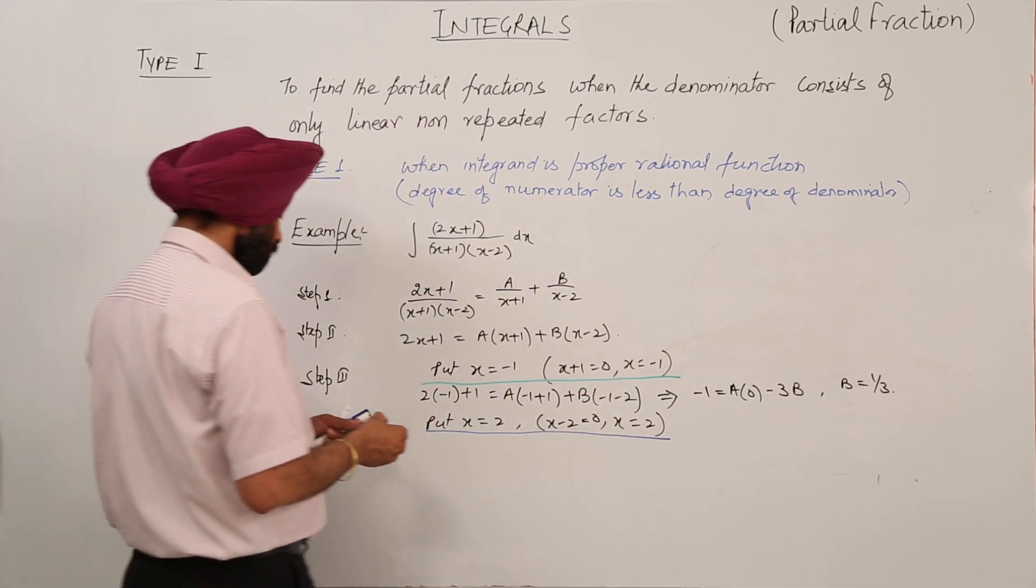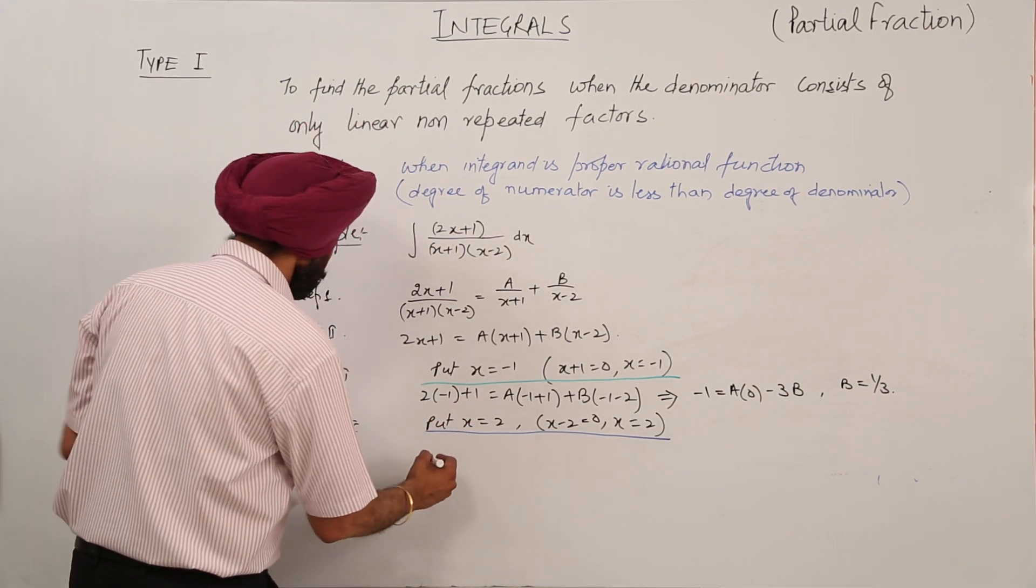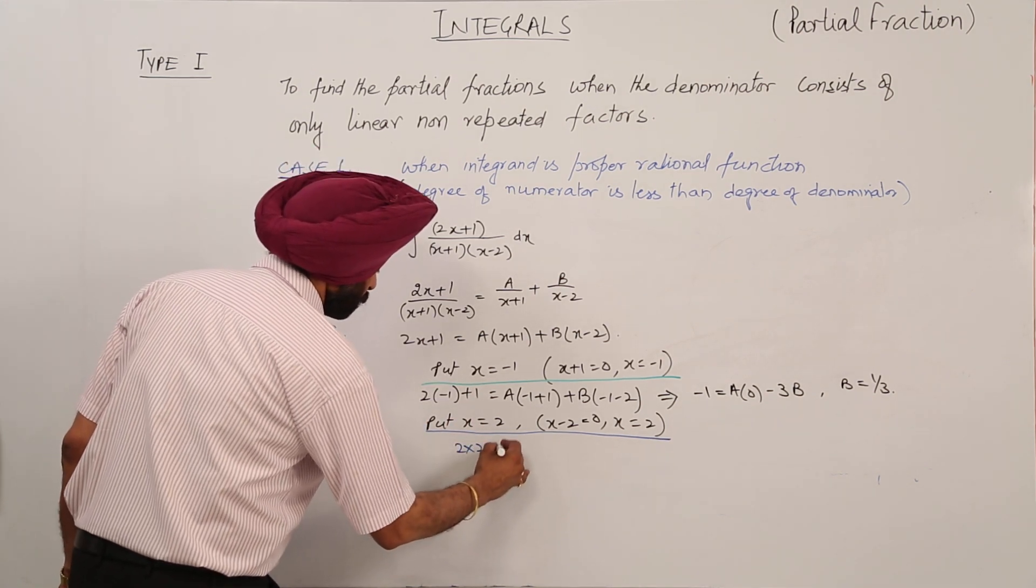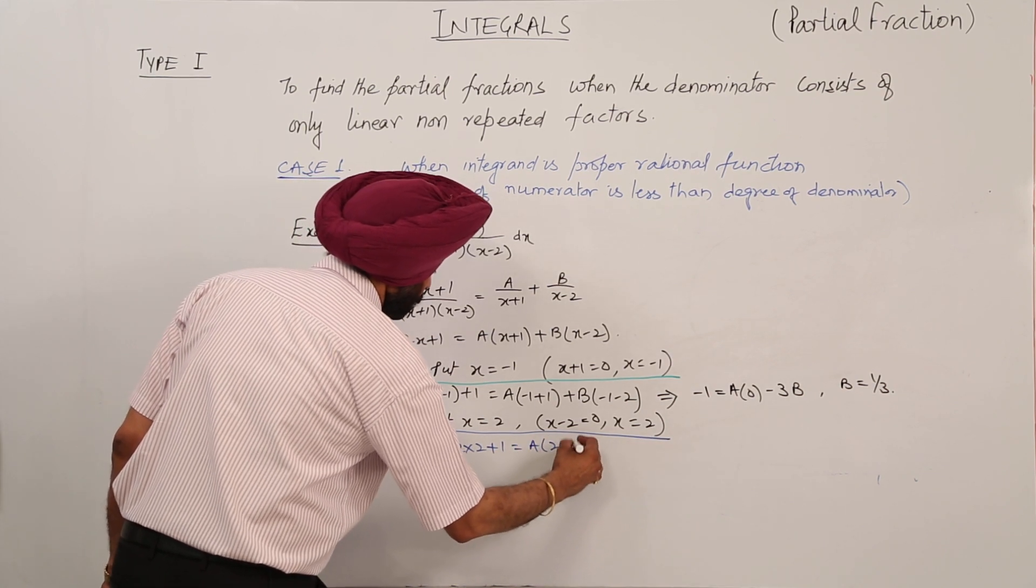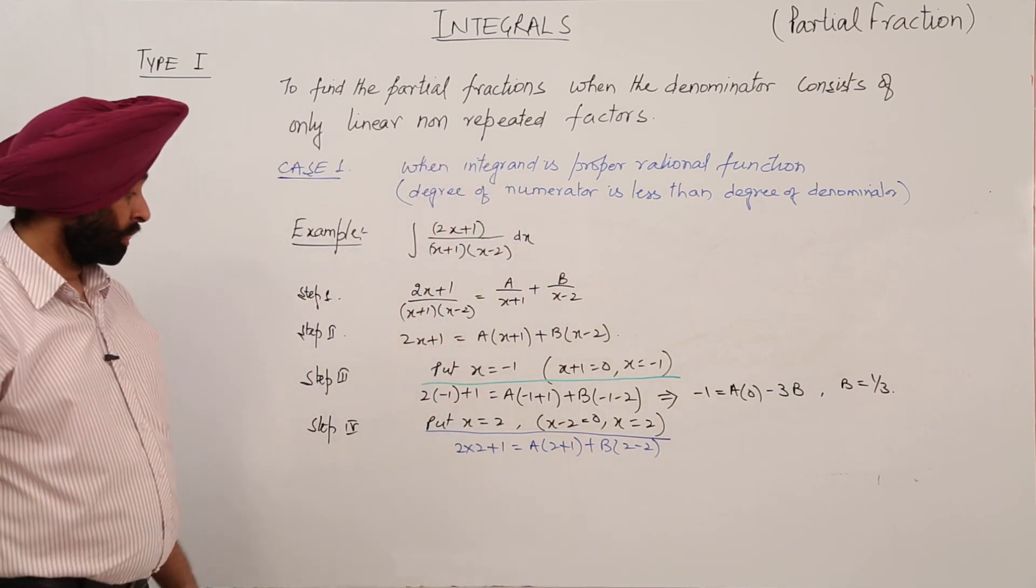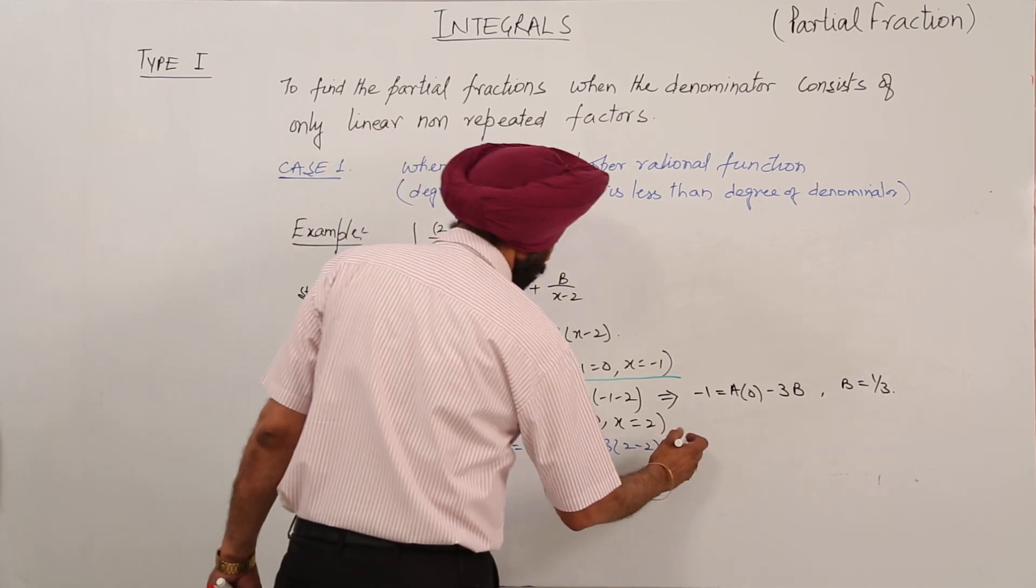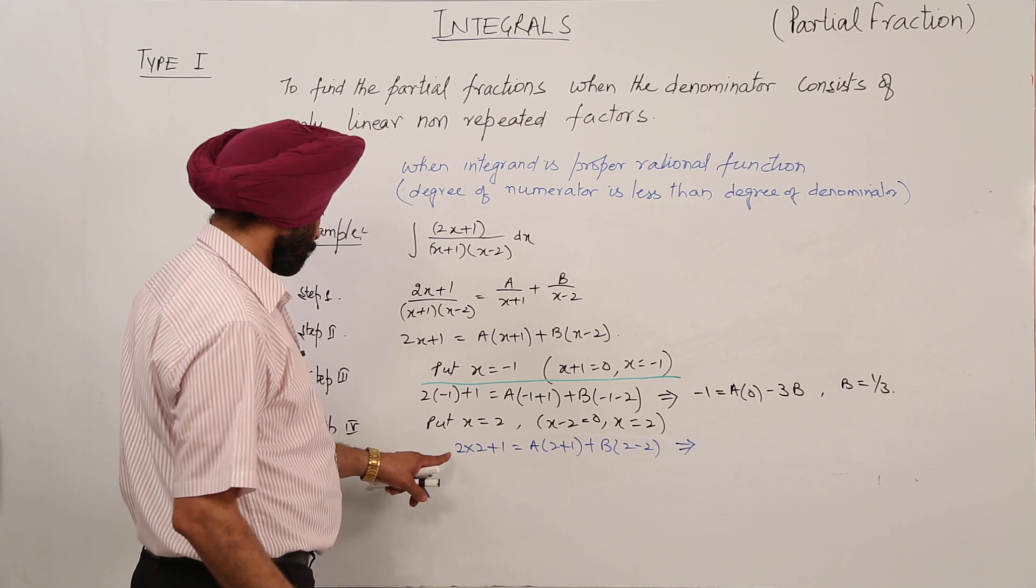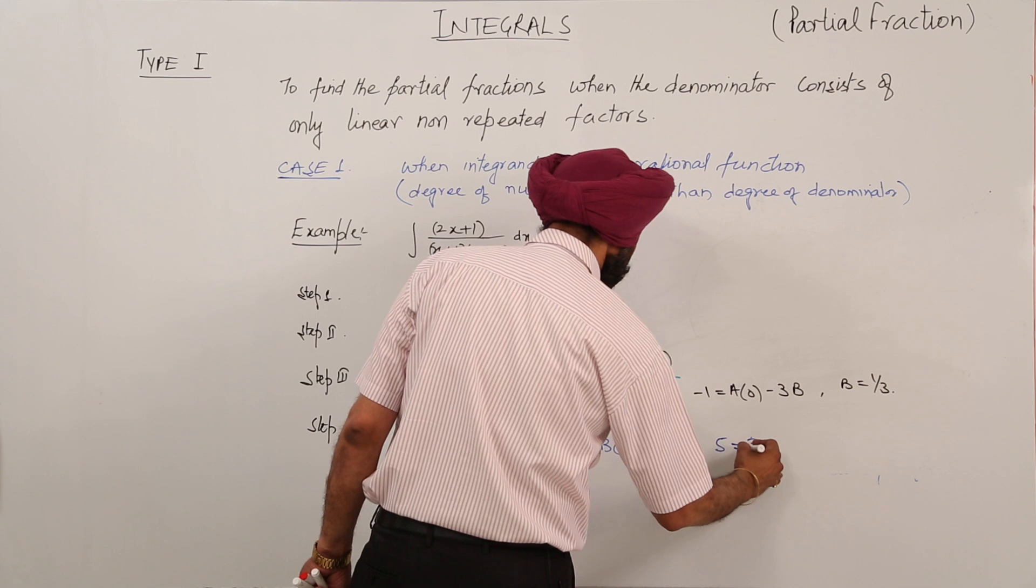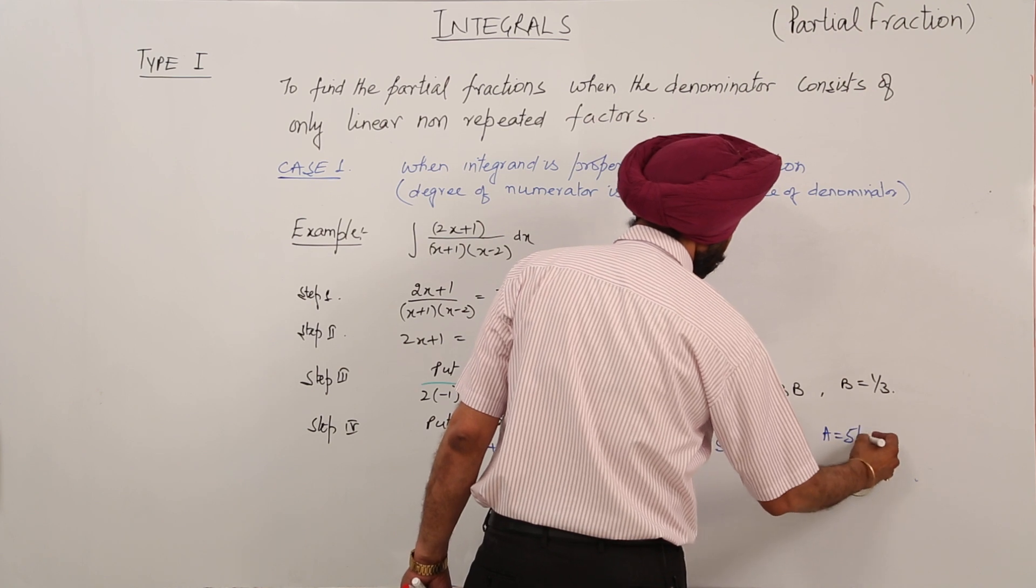On solving, we have put 2. This becomes 2 into 2 plus 1 is equal to A with (2 plus 1) plus B with (2 minus 2). This becomes 5 is equal to 3A, and B is 0, so A is equal to 5 by 3.